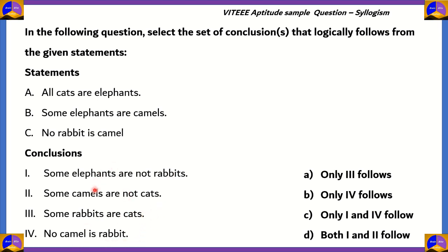Which of these conclusions are correct? Is it option A, only 3? Is it option B, only 4? Is it option C, only 1 and 4? Or is it option D, both 1 and 2? We are now going to represent these three statements using circular diagrams, a.k.a. the Venn diagrams.